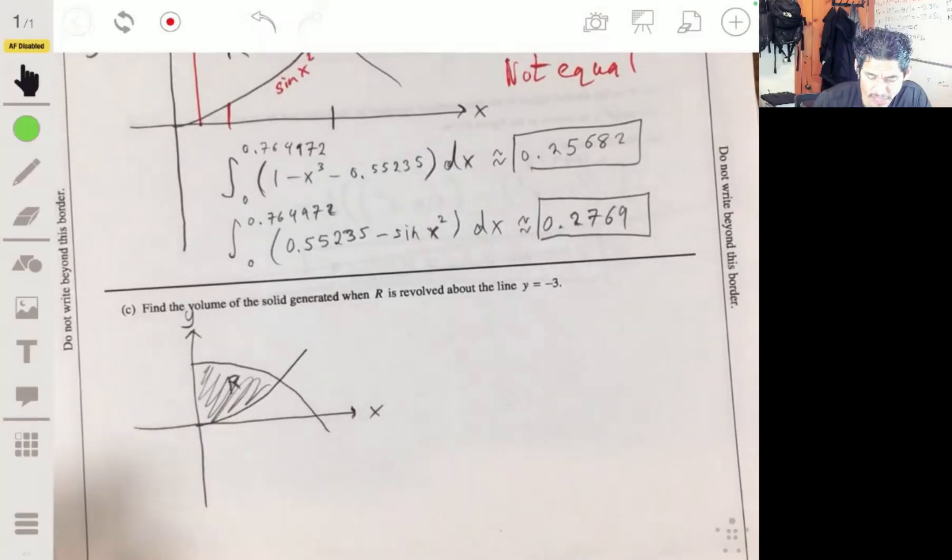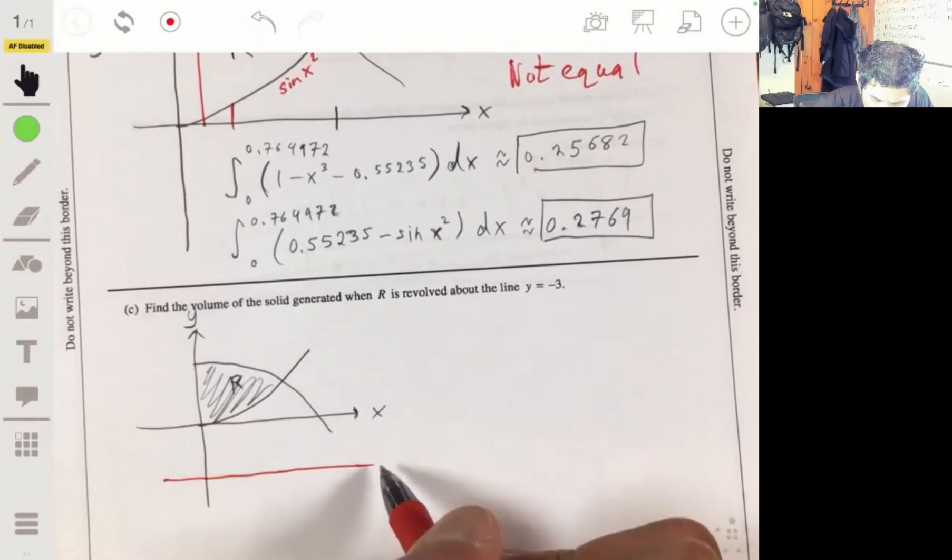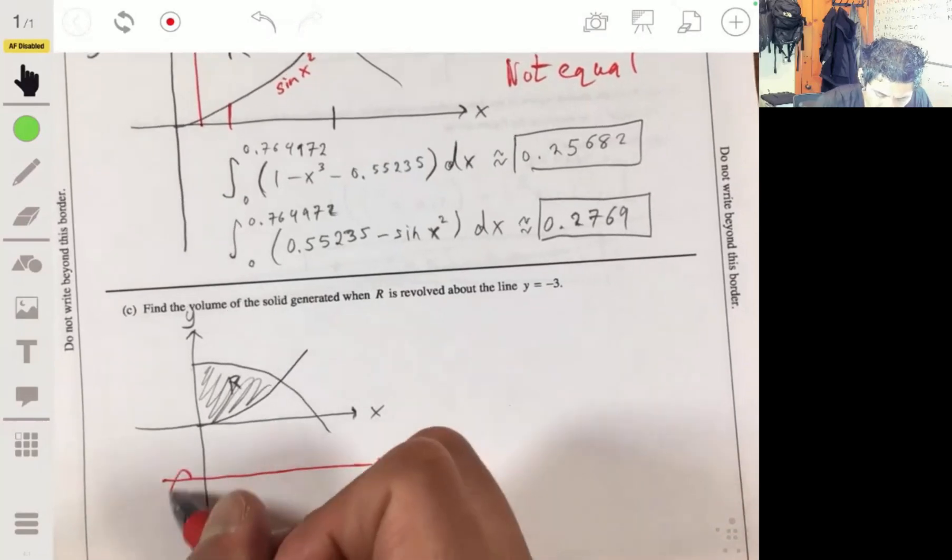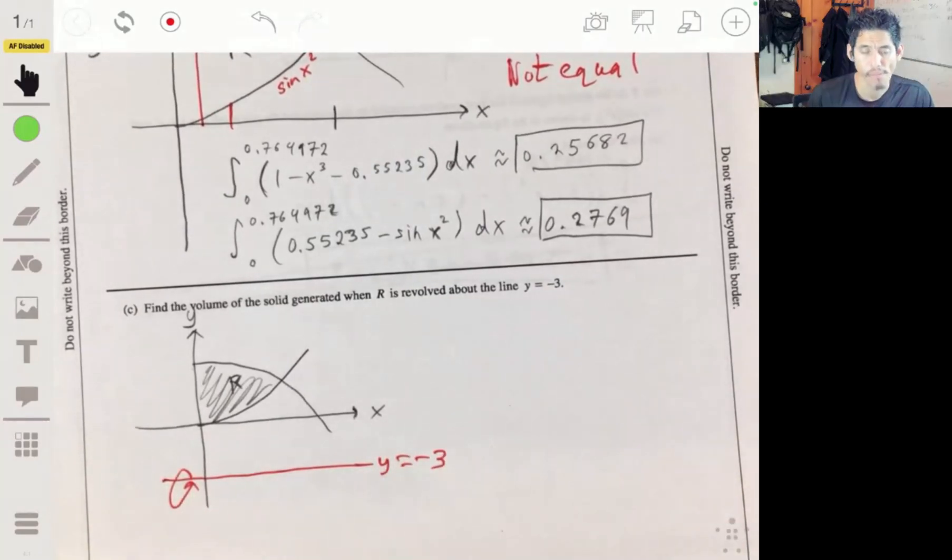We're going to revolve it about this line. Let's have, let's put it over here, y equals negative 3. We're revolving it around here.